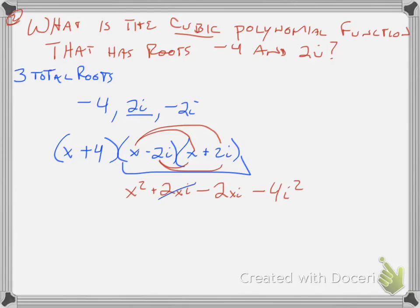Now, the two i's in the middle, I have positive 2xi, negative 2xi, they're going to cancel out. And remember, that i squared is equal to negative 1. So negative 4 times that negative 1 becomes positive 4.